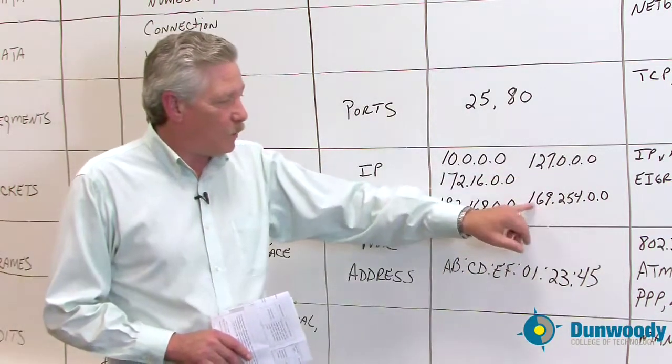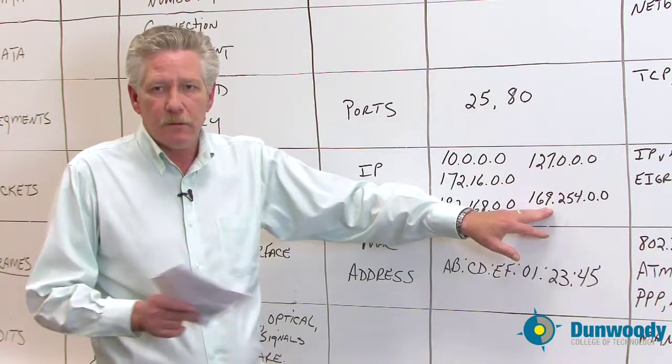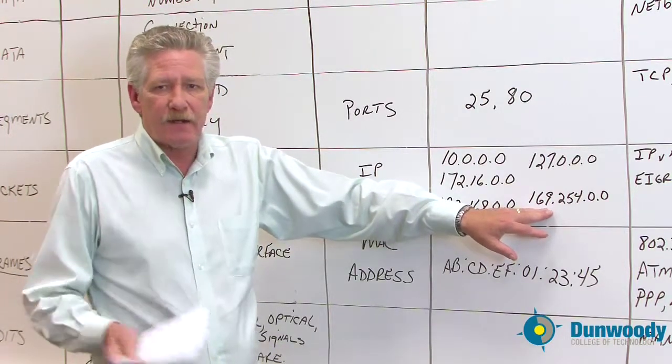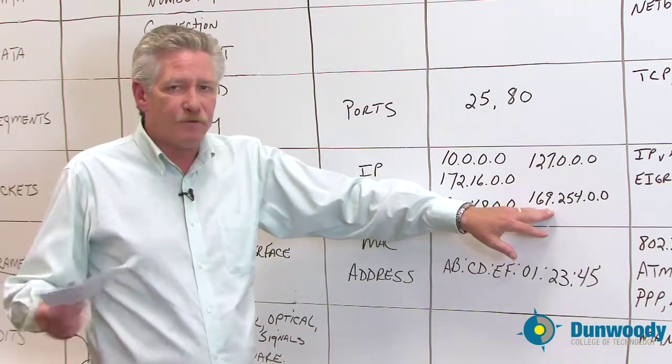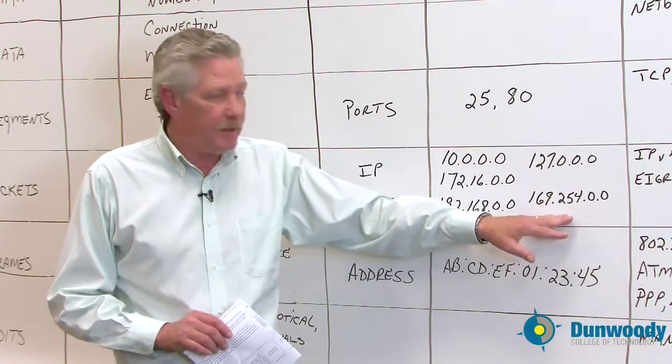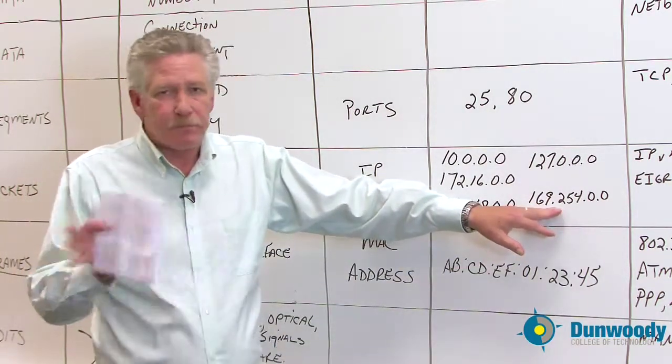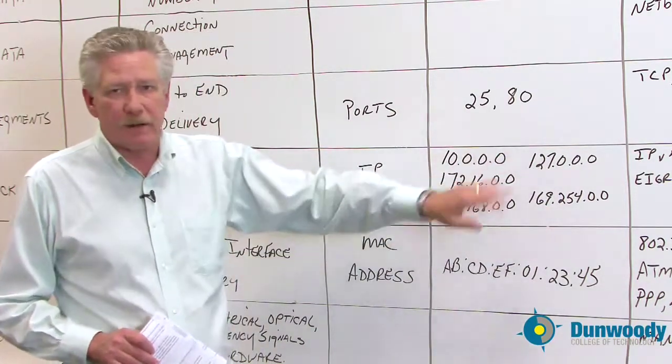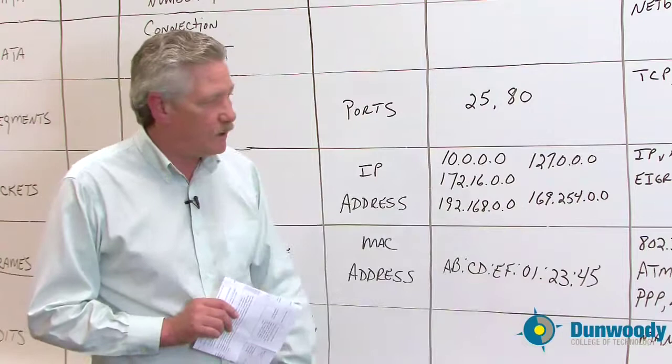And the last one, the 169.254 is a APIPA. This address is given to, at least in the Windows world, if your machine is not connected to a system that's running DHCP or you do not have a static IP address set for your network interface card, it will give the machine an APIPA address. The nice thing about the APIPA address, if you're hooking up two computers to transfer data back and forth, you don't need to go and put in any special numbers or anything. As long as the two APIPA addresses are different, you can transfer data back and forth between the machines.